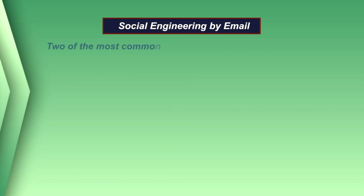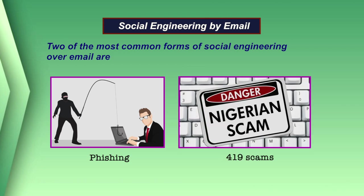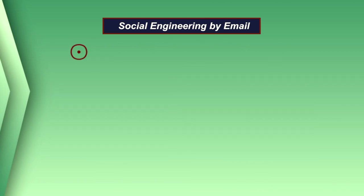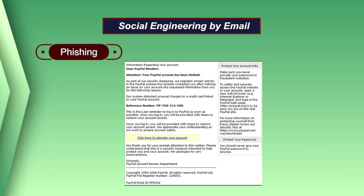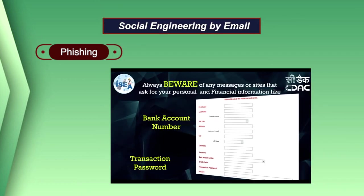Two of the most common forms of social engineering over email are phishing and 419 scams. Phishing emails typically take the form of fake notifications purporting to be from a well-known organization like a bank, payment systems, or software vendors, asking for the recipient's personal information including user credentials, credit card numbers, or banking information.